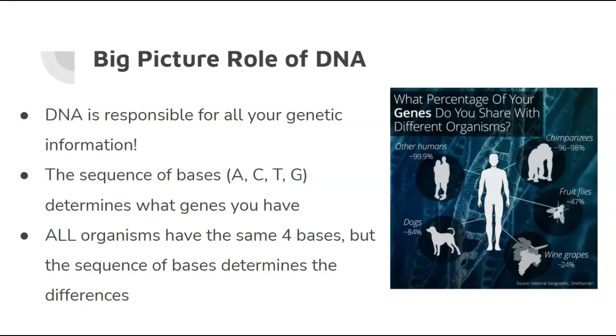So, all organisms, all living things on Earth, have the same four bases, have the same A's, C's, T's, and G's. But the sequence of those bases actually determines what the differences are. Humans, in comparison to other humans, are 99.9% pretty much the same. Humans pretty much all look similar. We have two arms, two legs. Typically, we all look, in a general sense, similar. But even with other organisms on Earth, dogs have a fairly high similarity in the genes we share. Even wine grapes, 24%, that's a quarter, and it's a plant. So, we all share the same four bases, but it's all about the order of the bases that determines how different organisms look from each other.